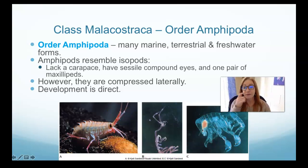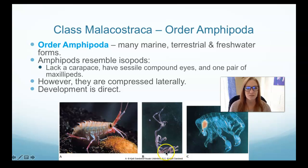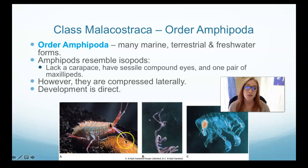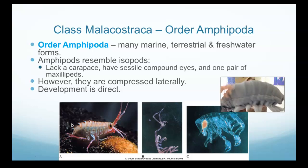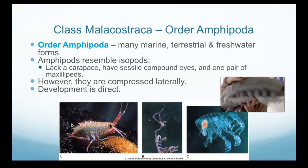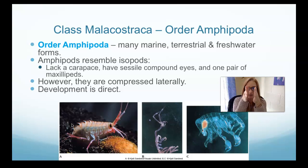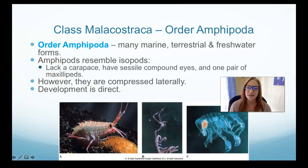The second order within Malacostraca is Amphipoda. Amphipods are tiny little cricket-pill-bug-looking things. They are really important in the plankton and as tiny detritivores. They don't have a carapace and look a lot like isopods. They have compound eyes and a pair of maxillipeds around their jaws, but they are compressed laterally — whereas pill bugs and isopods are squished dorsal-ventrally. They don't have a larval metamorphic phase — they hatch as tiny little guys and have direct development.